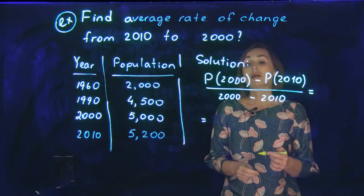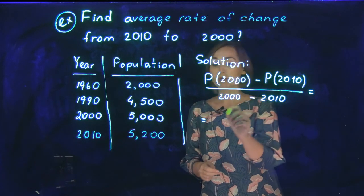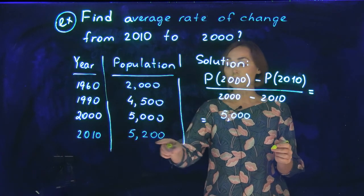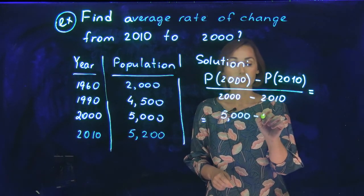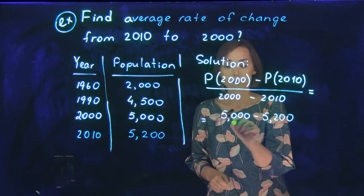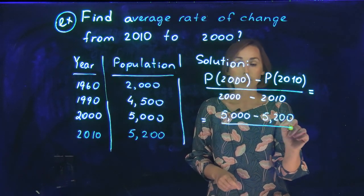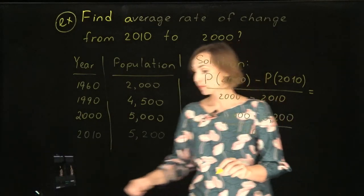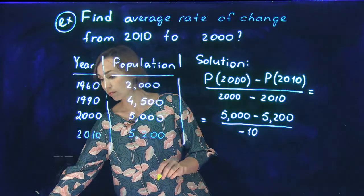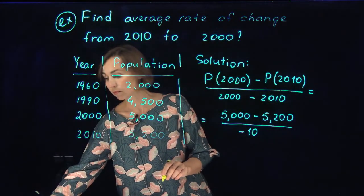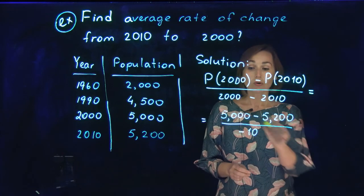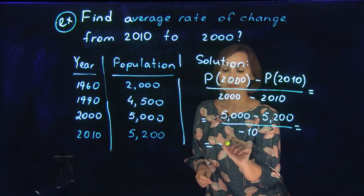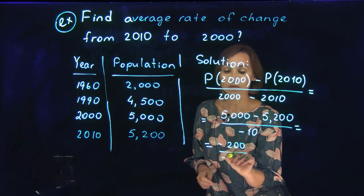Population in 2000 is 5000 people, and population in 2010 is 5200. The bottom, 2000 minus 2010, will be negative 10. The top will be 5000 minus 5200, which is negative 200, over negative 10.